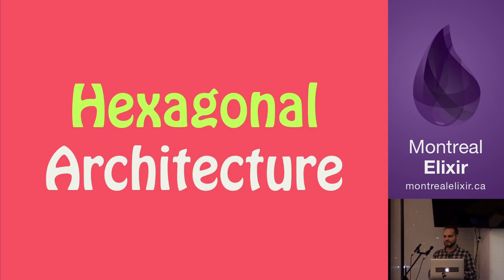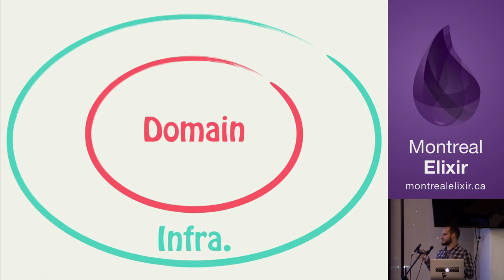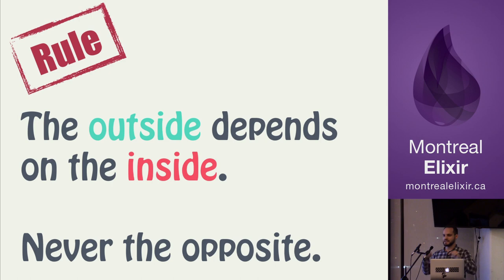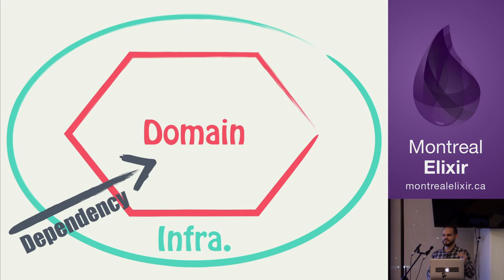Let's dive into hexagonal architecture. For me, hexagonal architecture is the simplest way to achieve this domain-infrastructure separation. It's as simple as drawing two circles: in the middle you have your domain code — no infrastructure at all — and on the outside you have your infrastructure code to make it work. There is one rule: the outside, the infrastructure, depends on the inside, the domain — not the contrary. Your domain doesn't know about the infrastructure.